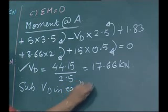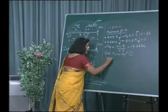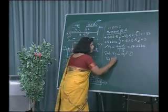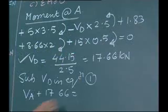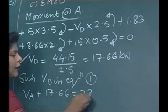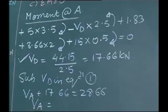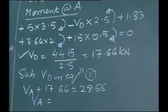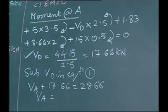In equation 1, if we substitute, we get VA plus 17.66 is equal to 28.66. So VA is equal to 28.66 minus 17.66, that is equal to 11 kilo newtons.